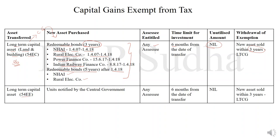Under section 54EE, long-term capital asset means the asset is held for more than 36 months. If this asset is sold and the new asset purchased is units notified by the central government. Under section 54EC, we have redeemable bonds redeemable after 3 years and 5 years. Under 54EE, any units notified by the central government. Any assessee can claim this deduction. 6 months from the date of transfer. The unutilized amount cannot be deposited in capital gain account scheme, and if the asset is sold within 3 years, the capital gain exemption will be withdrawn. So, 54EC and 54EE are similar — only the new asset that is purchased will be different.